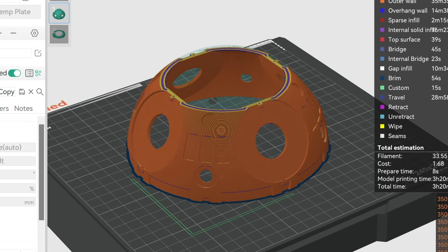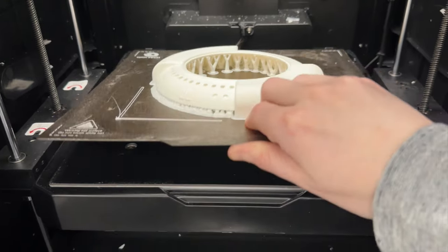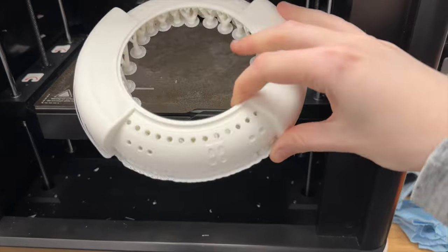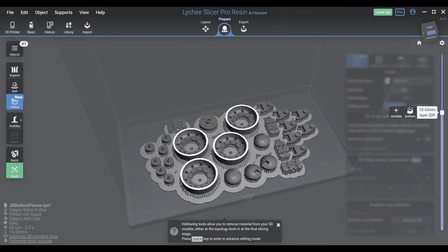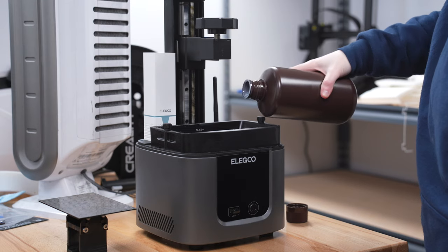Because of wanting to make this droid float in the future, I printed the completely split version so that I could FDM print the main frame and base and resin print all of the greeblies. There are a ton of greeblies on this ball.